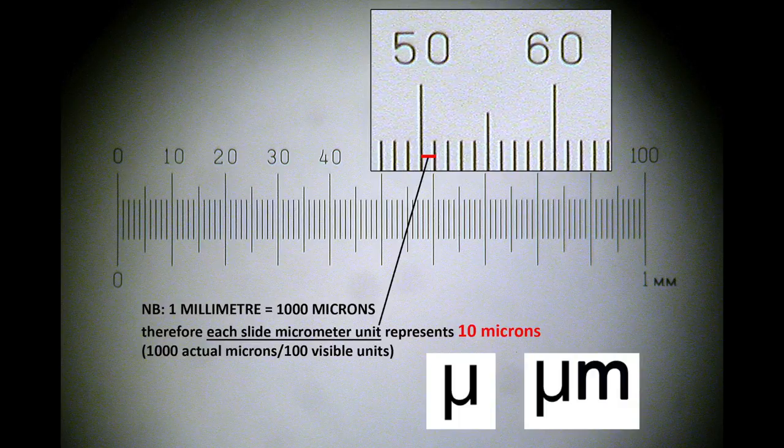If the eyepiece graticule is positioned correctly, and you have successfully set up the slide scale micrometer, then if you look down the eyepieces, you should see both scales.